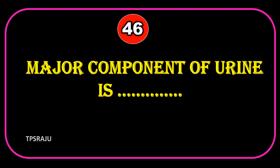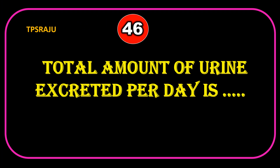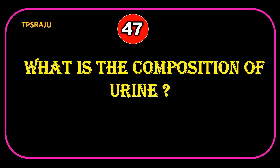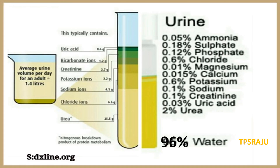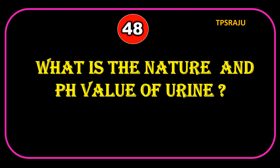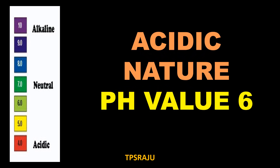Major component of urine is water. Total amount of urine excreted per day is about 1.6 to 1.8 liters. What is the composition of urine? Water 96%, organic substances 2.5%, and inorganic substances 1.5%. What is the nature and pH value of urine? Acidic nature, pH value is 6.